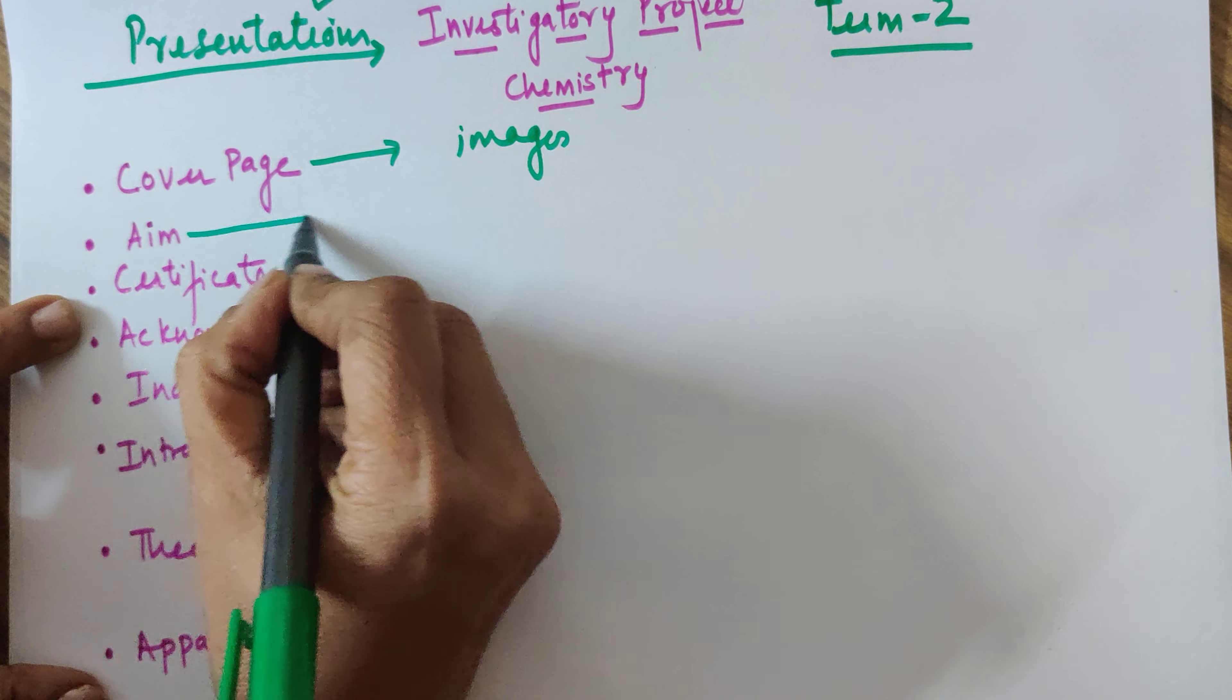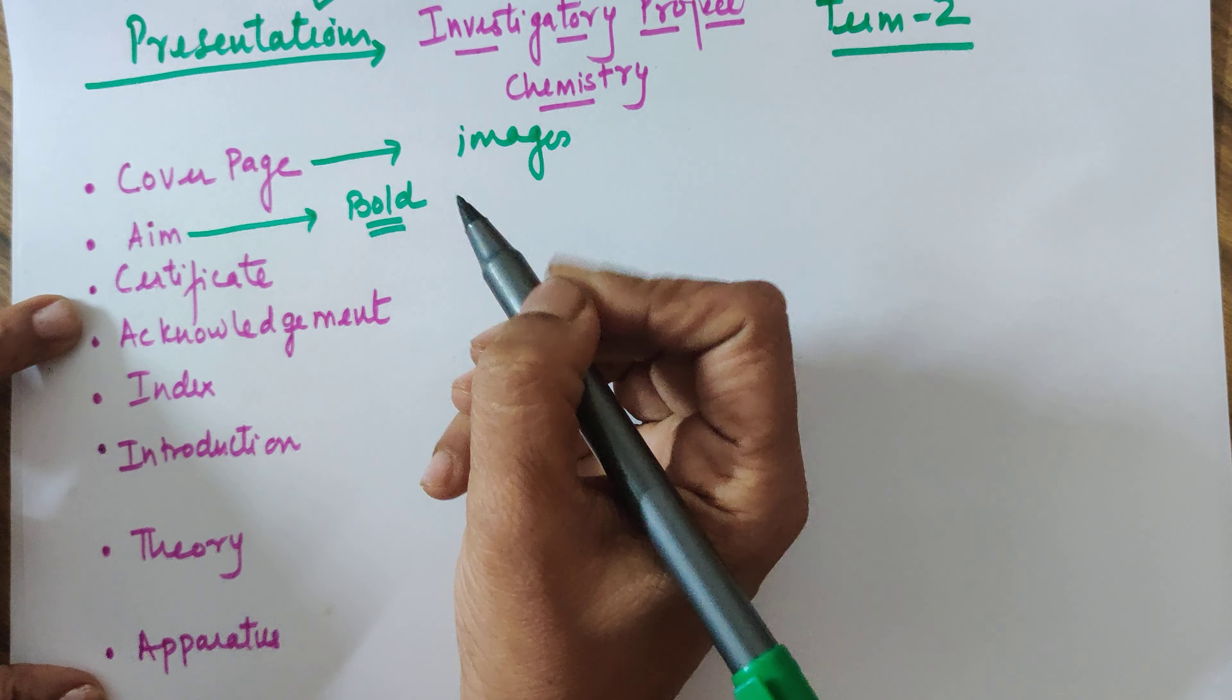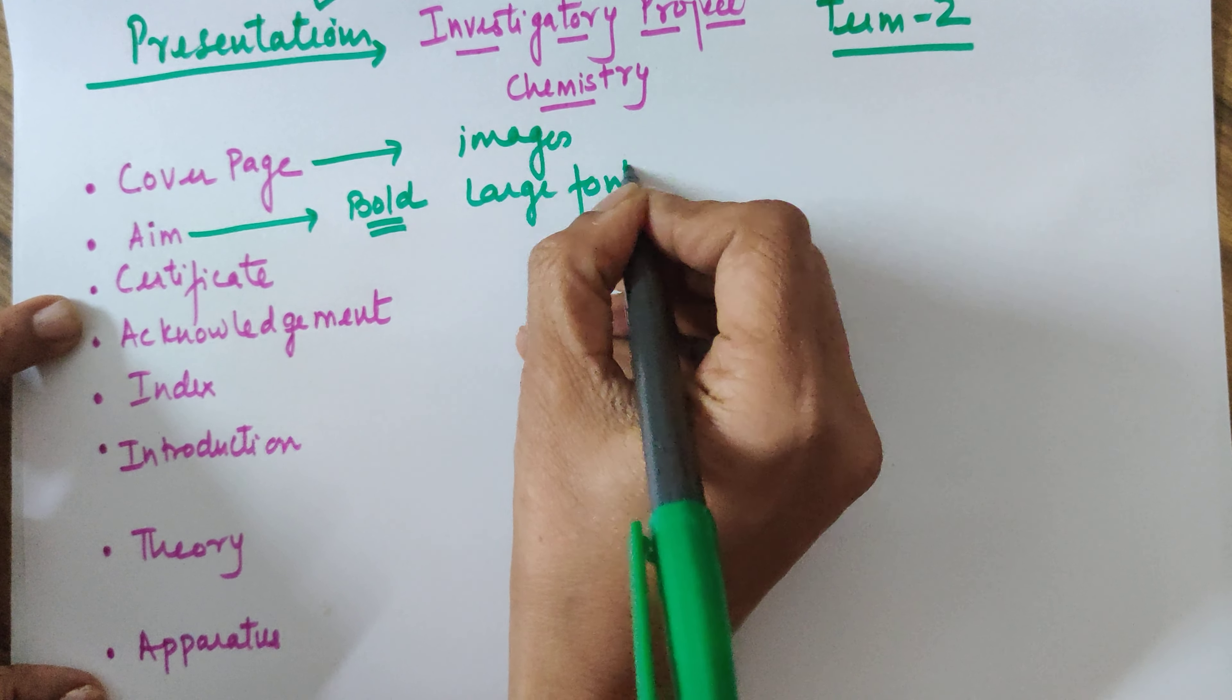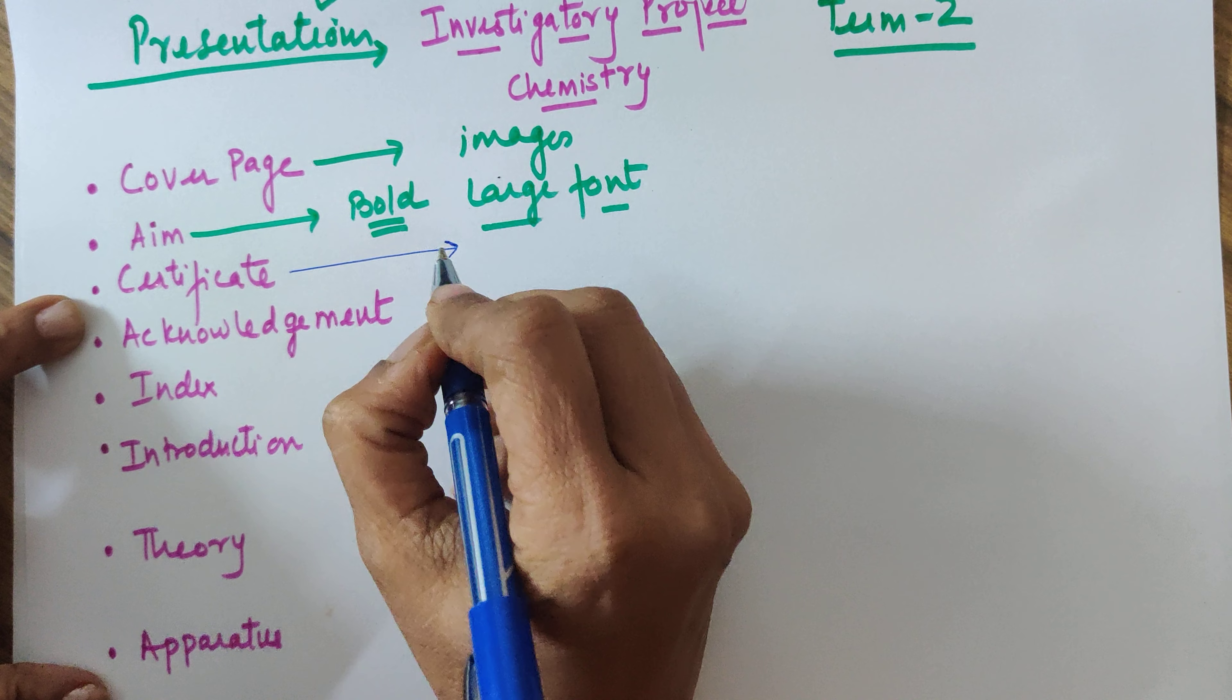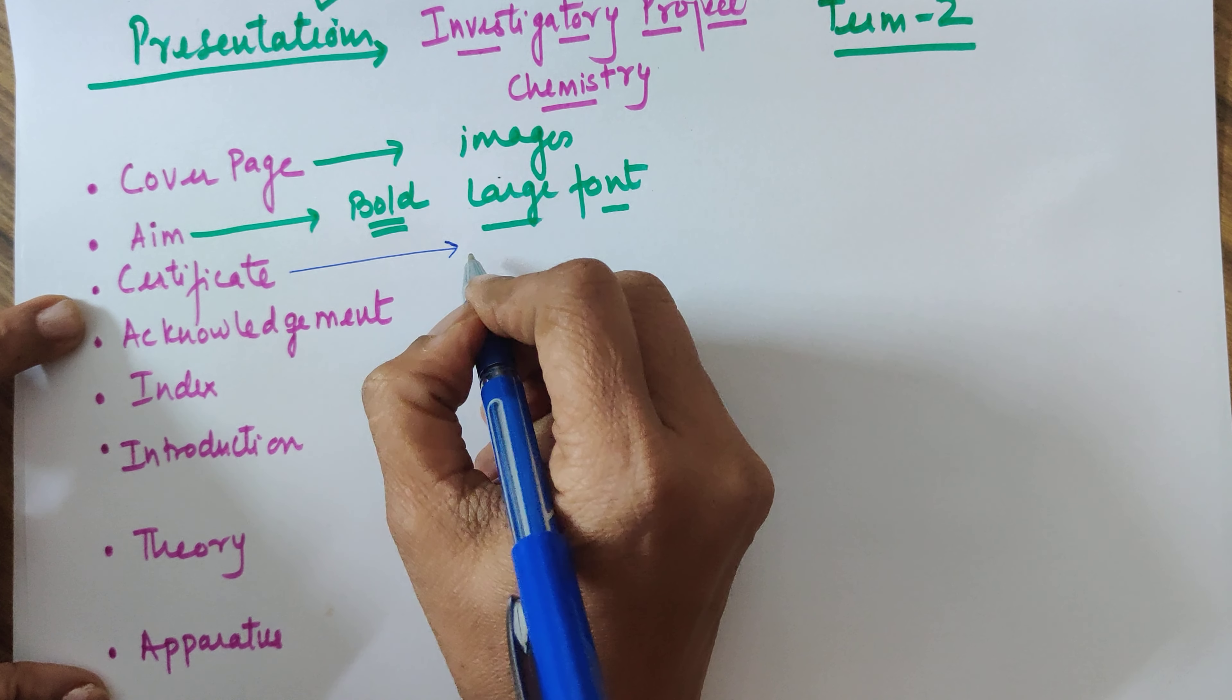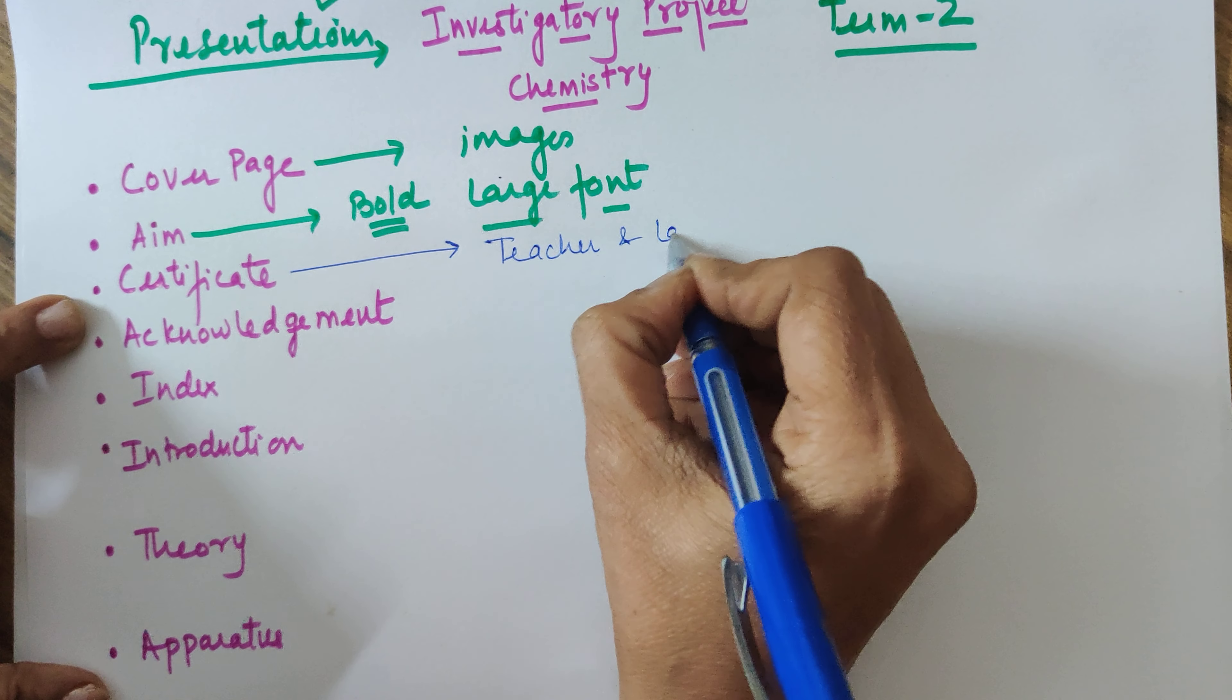Next is the aim. The aim of your project preferably should be in bold and should be of a large font so that it's clearly visible. Next is a certificate. This is very important. The certificate you write has to be signed by your teacher and your lab assistant.